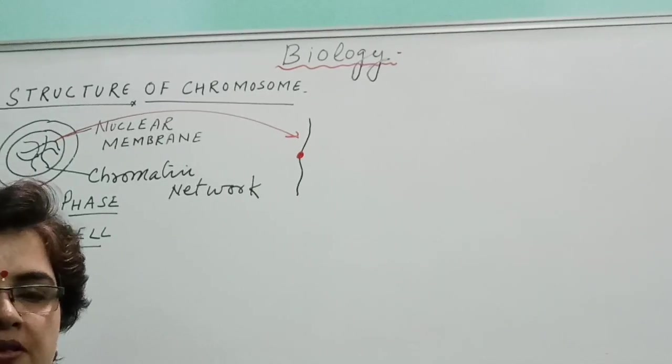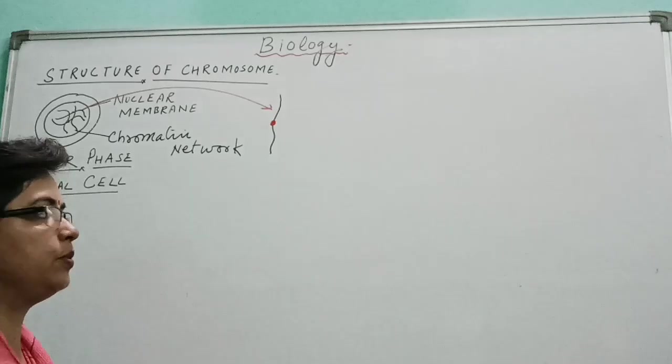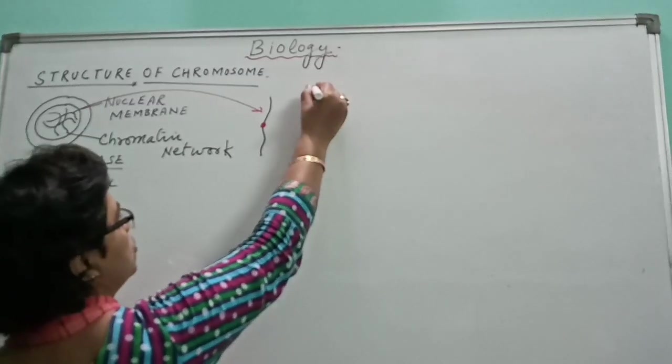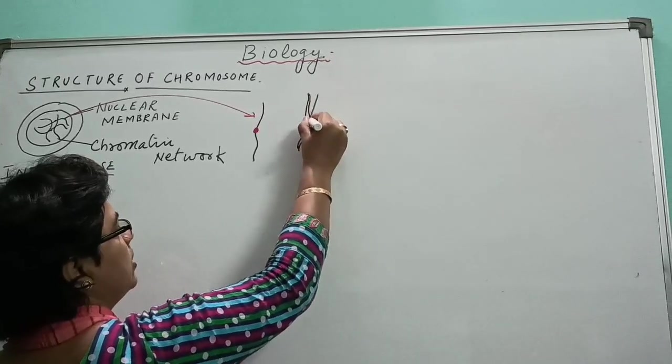At the time of cell division, the two sister chromatids of the single chromosome are visible. So when we draw the two sister chromatids, it will show the structure like this one.